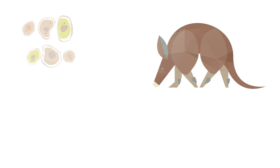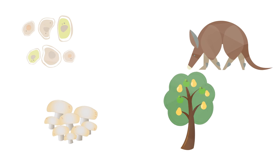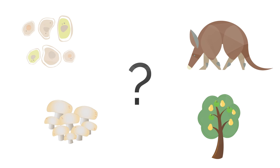From amoebas to aardvarks and fungus to fruit trees, what does it mean to classify organisms? Why do we do it and how is it done?